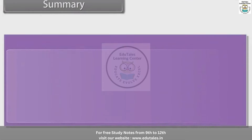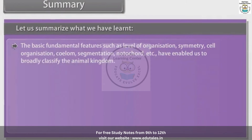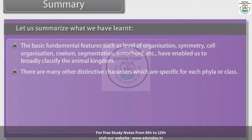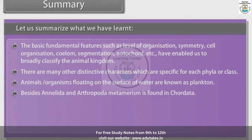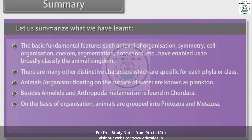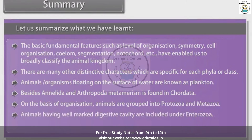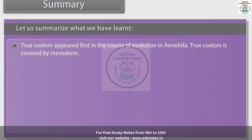Summary: The basic fundamental features such as level of organization, symmetry, cell organization, coelom, segmentation, notochord, etc., have enabled us to broadly classify the animal kingdom. There are many other distinctive characters specific to each phylum or class. Animals floating on the surface of water are known as plankton. Besides Annelida and Arthropoda, metamerism is found in Chordata. On the basis of organization, animals are grouped into Protozoa and Metazoa. Animals having a well-marked digestive cavity are included under Entrozoa. A true coelom is absent in phylum Platyhelminthes and Nematoda. True coelom appeared first in the course of evolution in Annelida.